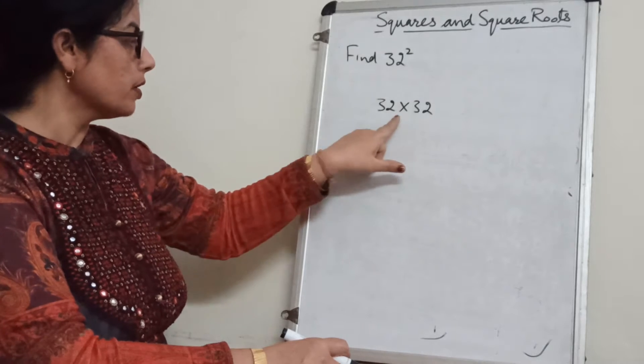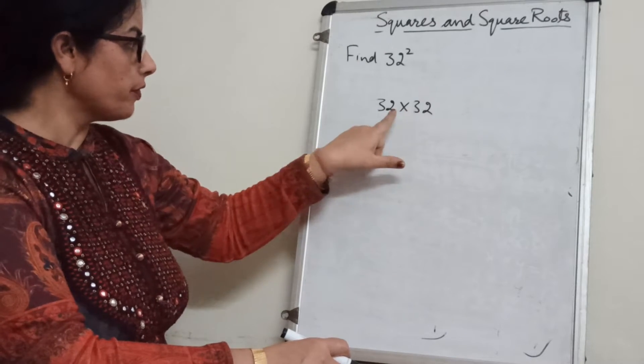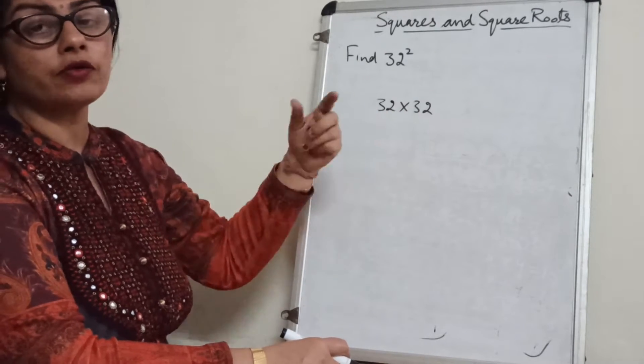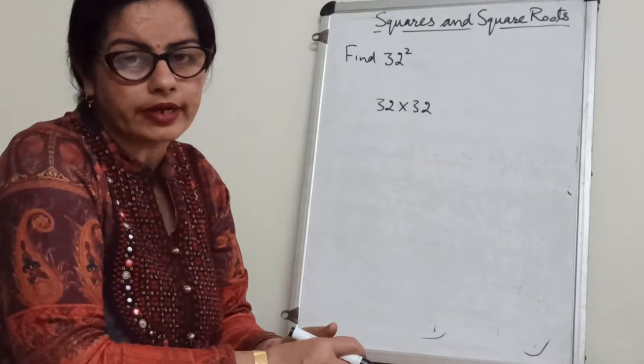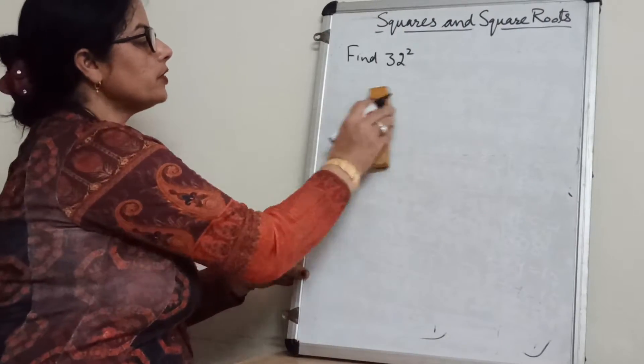We will not apply this thing. Without this thing we have to find the value of square of 32. So how we will do?